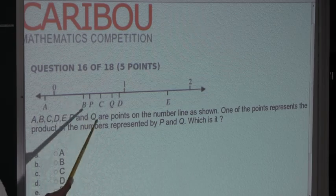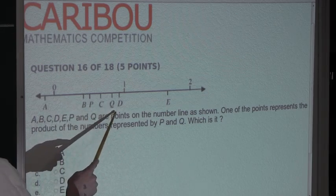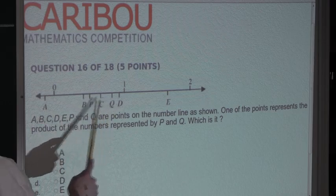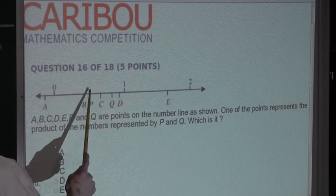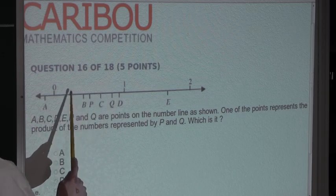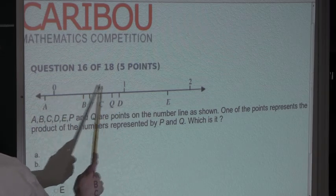So, let's look at the points P and Q. We know that both of these points have values that are greater than 0 and less than 1 because they are within this range right here.